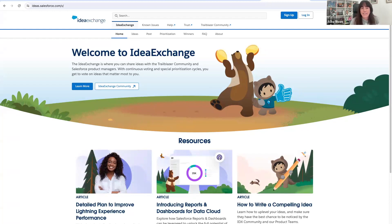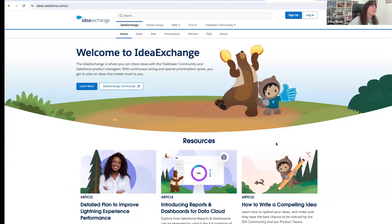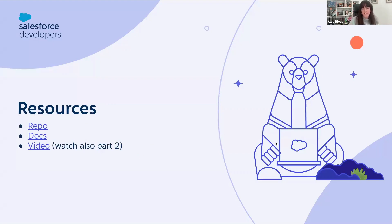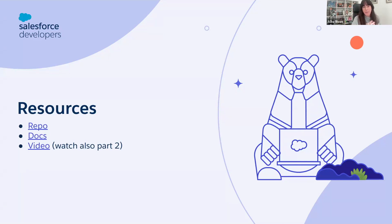Erin is asking: in the example where we retrieve accounts and contacts, does that count as two queries? Yes, it counts as two SOQL queries because behind the scenes the GraphQL API engine is doing two queries. But they arrive fast to your client because they come in one single server roundtrip.